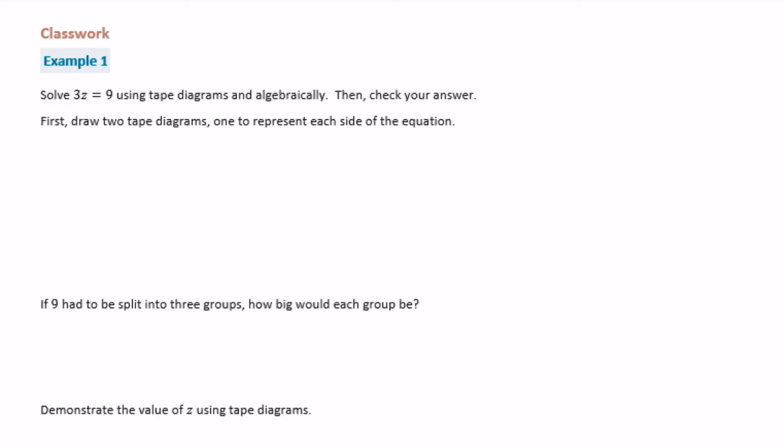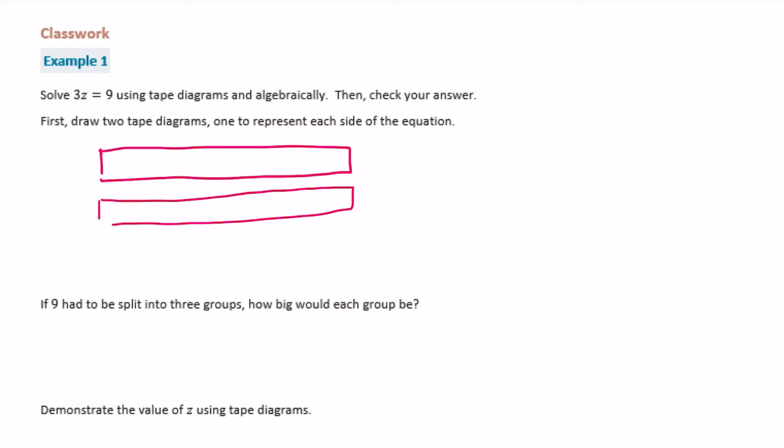Solve 3z — that means 3 times z — is equal to 9, using tape diagrams and algebraically. Then check your answer. It's going to walk us through it step by step. First, draw two tape diagrams, one to represent each side of the equation. So we're going to draw two tape diagrams, one for each side: one for 3z and one for 9.